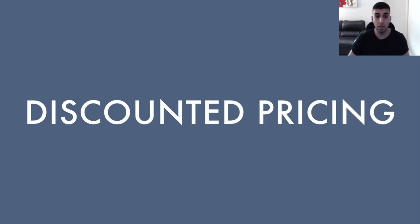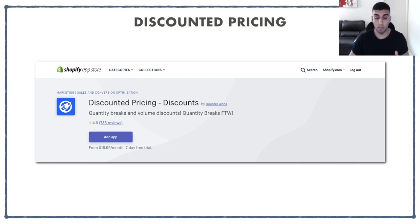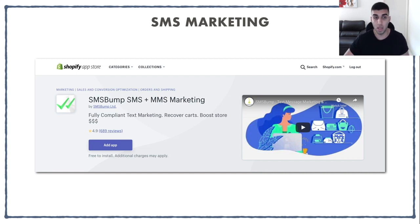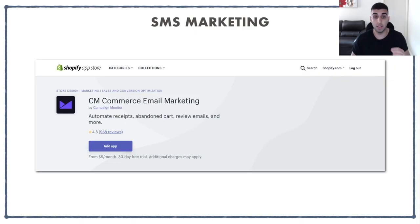The first one is going to be discounted pricing — specifically, discounted pricing by Booster Apps. In my opinion, this is by far the best one. The SMS marketing app is going to be SMS Bump. From these three apps, this is probably the best one because you get a crazy amount of return for how much you spend. The email marketing app is going to be CM Commerce — this used to be called Conversio, but they recently changed its name. These are the top three best apps that I use, and I'm going to show you guys exactly how to set up each one.